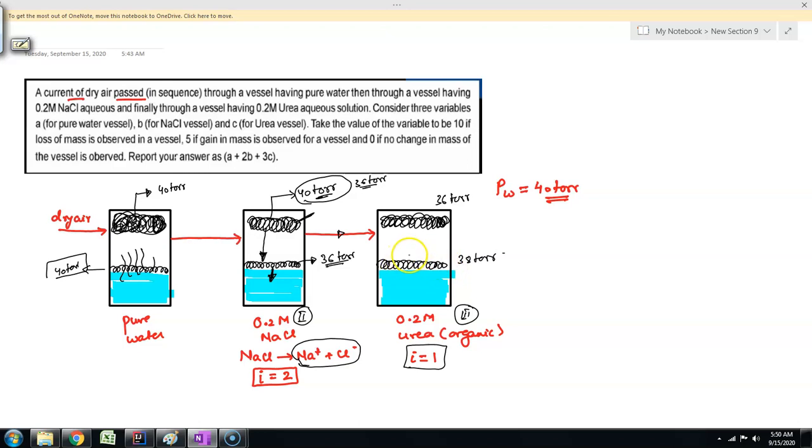Now when equilibrium is established, this water vapor goes up, which is seen as loss in liquid level. So in the first one it is loss in liquid level of water. In second it is gain, and third it is loss again.